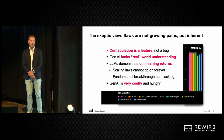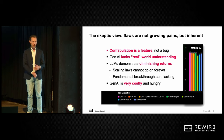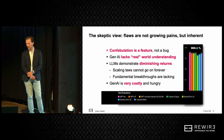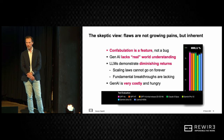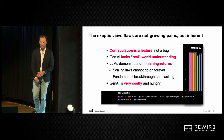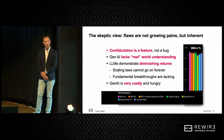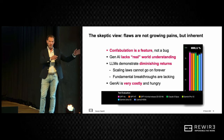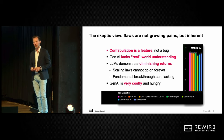On top of that, skeptics claim there are diminishing returns. If you analyze the performance of all the OpenAI models coming out, the benchmarks aren't really progressing that much anymore. OpenAI still hasn't launched GPT-5, so they're probably struggling. All the claims are based on scaling laws, and those scaling laws can't go on forever — we've essentially used all the data on the internet by now. So we're probably hitting a plateau. I'm not saying this is true; I'm just presenting the skeptical view.